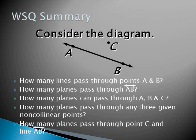Okay, and as promised, here's your WSQ summary. I just want you to look at this diagram. There's a line AB, and then a point C that is non-collinear with points A and B. So I want you to answer these five questions in your WSQ summary. Email them to me. And I'll see you in class.